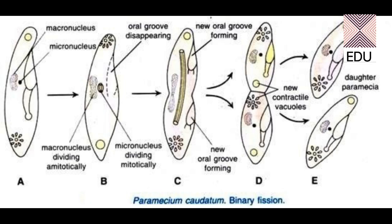The division of the micronucleus involves all the phases of cell division — prophase, metaphase, anaphase, and telophase — but these phases are absent in macronucleus division because it divides by amitosis. In the third figure, you can see the micronucleus is dividing by formation of a spindle, and the macronucleus has a constriction in the center, dividing simply into two.